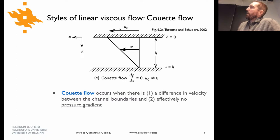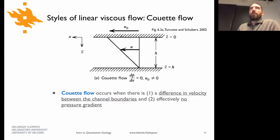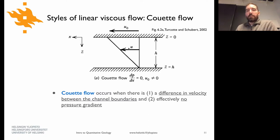One application of Couette flow is in regions where you have a subducting plate — the region between the two plates, called the subduction channel, can show velocities that look something like this. There are also ways to see this with folding in rock that is viscous at depth in the Earth.